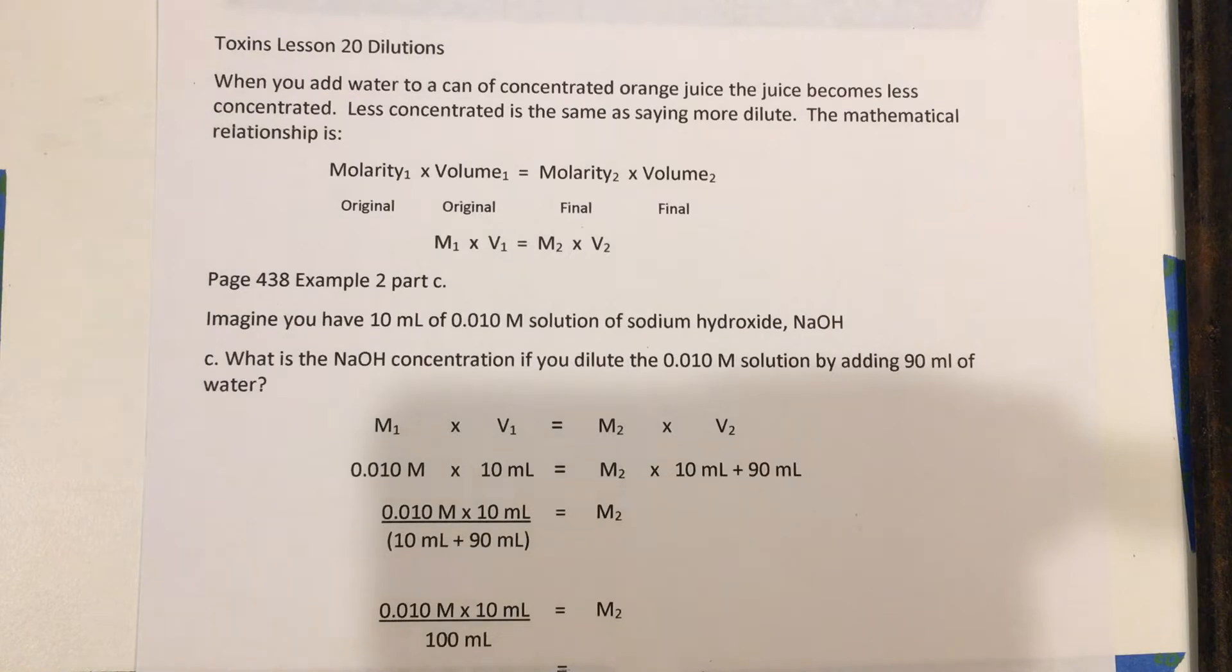So in the homework, or just before the homework on page 438, Example 2 Part C, it says this: Imagine you have 10 milliliters of 0.010 molar solution of sodium hydroxide. What is the concentration if you dilute the 0.010 molar solution by adding 90 milliliters of water? Well, there's a couple ways to do this problem.